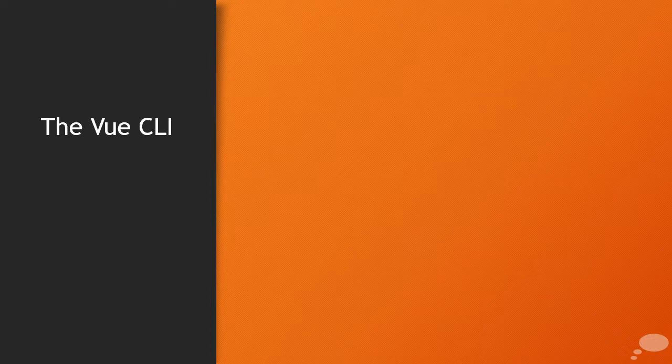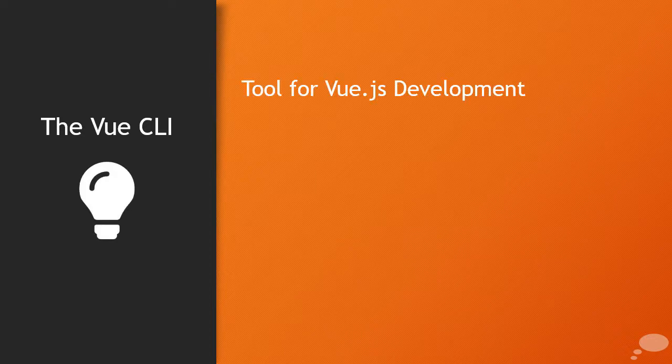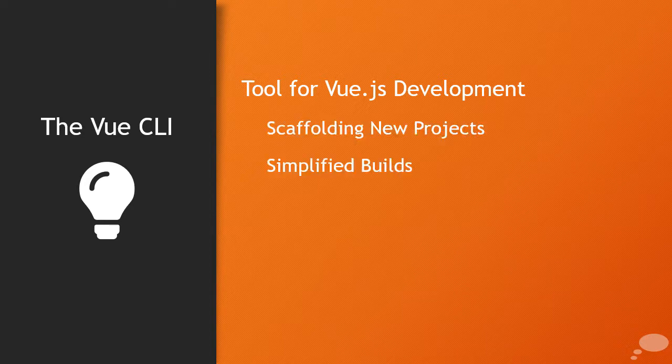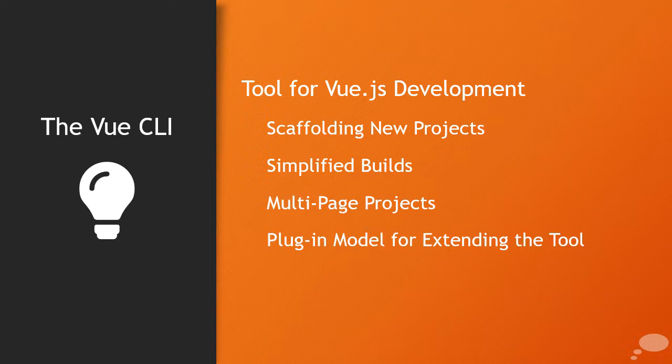So what exactly is the Vue CLI? It's an optional tool for helping you along with Vue.js development. It's useful to scaffold new projects, simplify builds for Vue, and it can support multi-page projects. There's a plugin model where you, or other open source authors, can extend the Vue CLI to do more things. The idea is simply to allow you to get up to speed to build more complex applications without having to deal with a lot of the build mechanics. If you're going to build a fairly large Vue application, Vue CLI is a great way to get started.